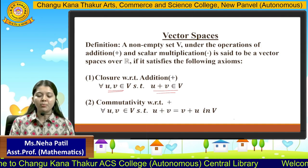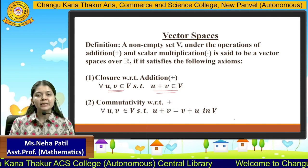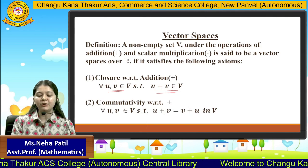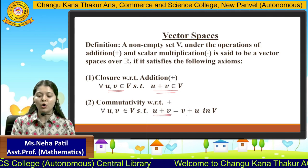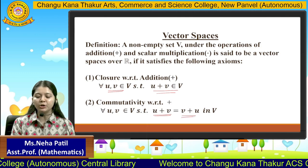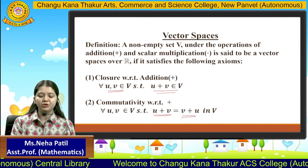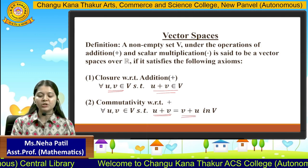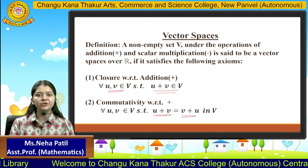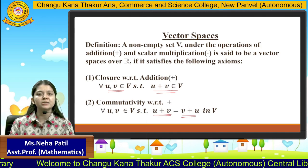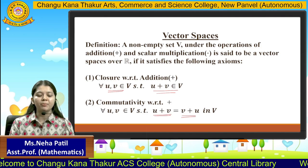The second property is commutativity with respect to addition. This says that if we add any two elements of the set, it will always equal the rearrangement of their addition — meaning u plus v will equal v plus u. Even if we rearrange them, the answer would be the same, satisfying the second property.